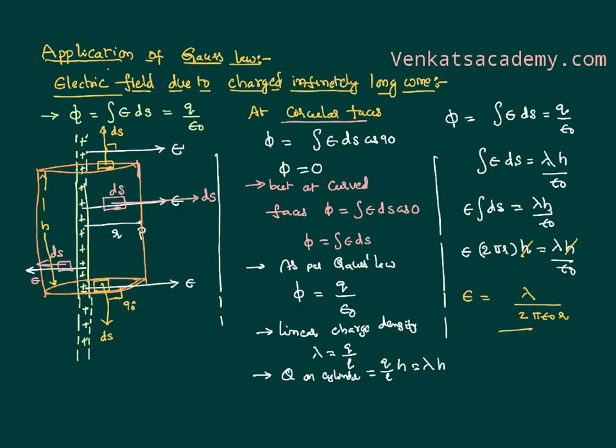So the electric field intensity is equal to lambda divided by 2·pi·epsilon-0·r. We are simply able to identify the electric field intensity due to an infinitely long charged conductor at a particular point, using the charge available and the area under consideration through the term linear charge density — that is charge per unit length. Thank you for tuning in; we will continue with further video lessons. See you back. Thank you.